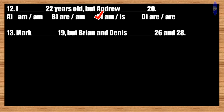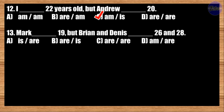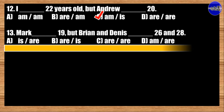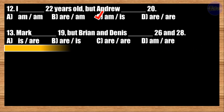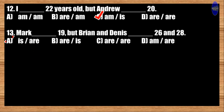Number thirteen: Mark blank 19, but Brian and Dennis blank 26 and 28. A: is, are; B: are, is; C: are, are; D: am, are. The correct answer is option A. Mark is 19, but Brian and Dennis are 26 and 28.